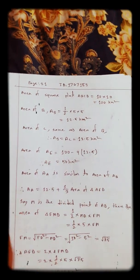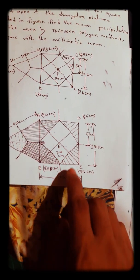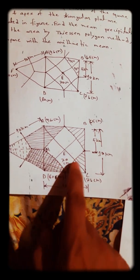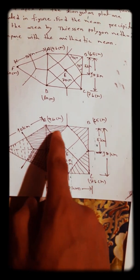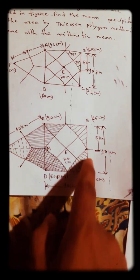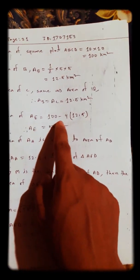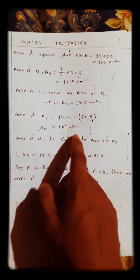For area E, we subtract the four corner triangles from the square. So: 100 minus 4 × 12.5 gives us the value of area E as 50 square kilometers.